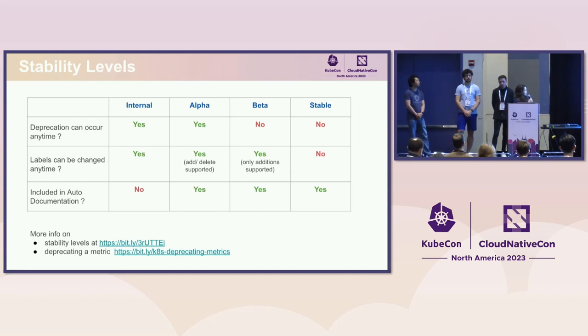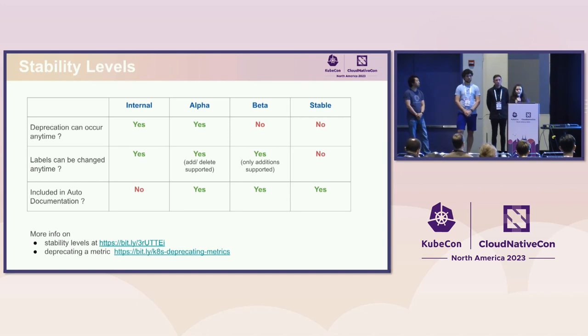It's not even recommended to use internal level metrics for monitoring Kubernetes workloads. You can read more about the stability levels in the first link mentioned here, and if you want to know more about the process around deprecating a metric, the second link is helpful.